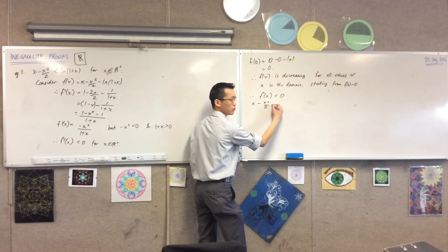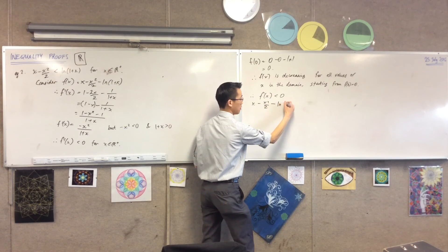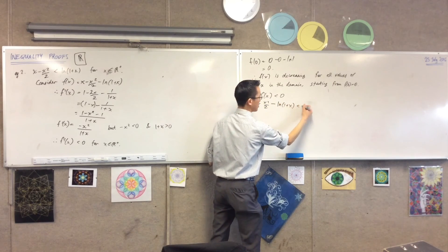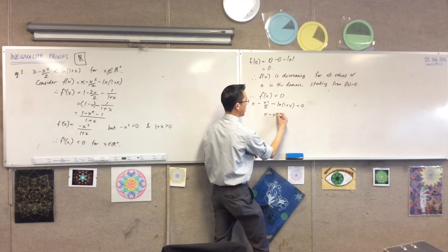So what was it? x take away x squared on two take away log of (1 + x) is less than zero. So then I just have to add to both sides.